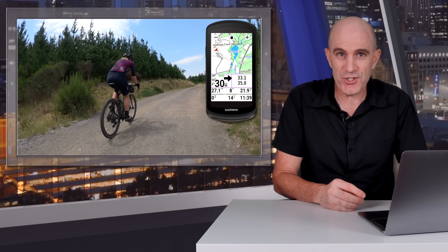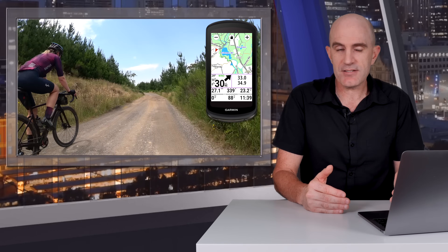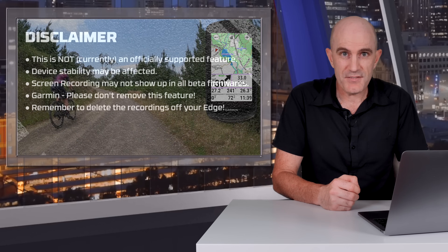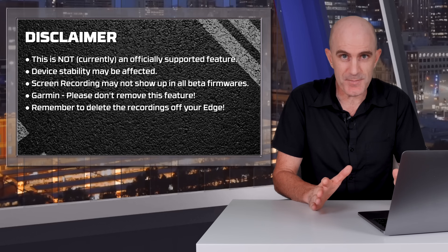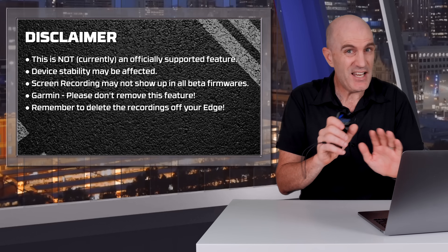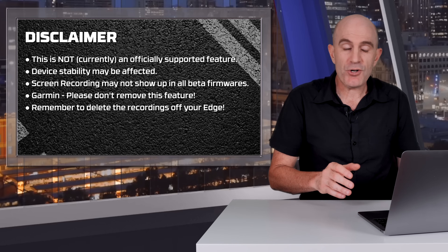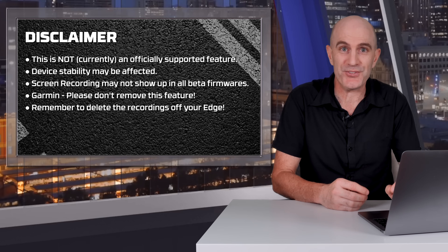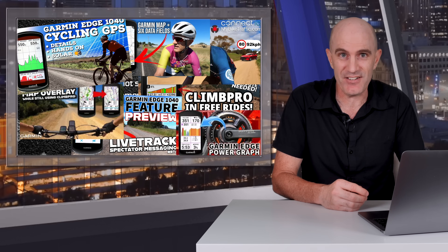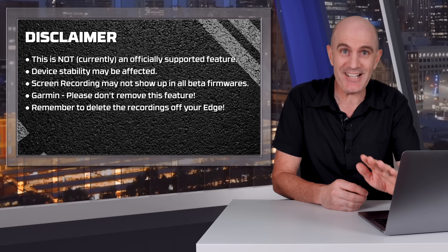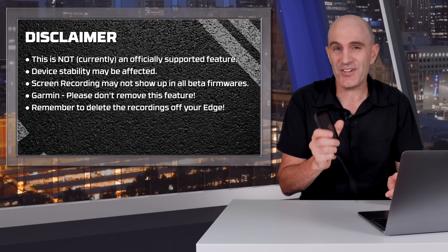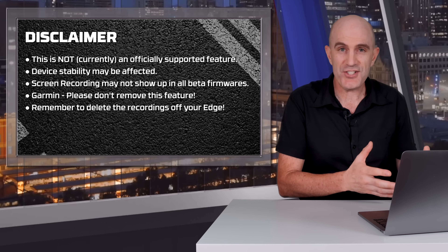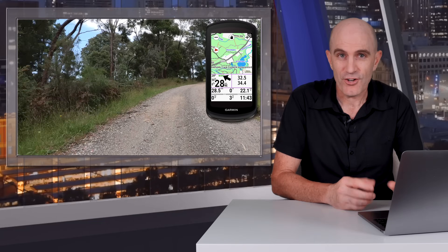There is a bit of legwork to do to get the job done, but once you've got FFmpeg installed and your commands sorted out, it's just a case of cut and paste from there on in. Before wrapping up, a disclaimer: this isn't an officially supported feature from Garmin, so don't expect any support there — device stability may be affected. It may not show up in all beta firmwares; it's been a bit hit and miss lately. And I hope Garmin doesn't remove the feature altogether, as it is very very useful. Lastly, do remember to clear out those files — indexing thousands of files isn't really what this device is made to do, so clear those out and give your Edge a better chance of working.